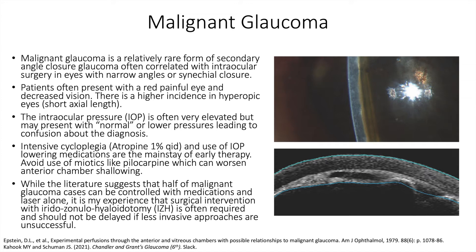Malignant glaucoma is a diagnosis of exclusion, and more common processes should be considered and ruled out with clinical exam and ultrasound as appropriate. Some of the differential diagnoses include pupillary block with angle closure glaucoma, choroidal effusion, and suprachoroidal hemorrhage.